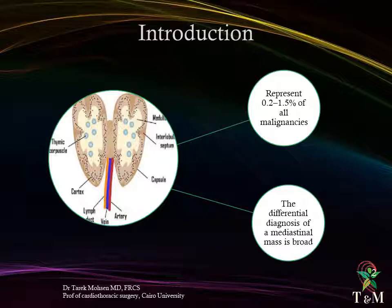The differential diagnosis of a mediastinal mass is broad, including malignant and benign etiologies such as lymphomas, germ cell tumors, thymic tumors, thyroid goiter, infections such as tuberculosis, and granulomatous disorders such as sarcoidosis.